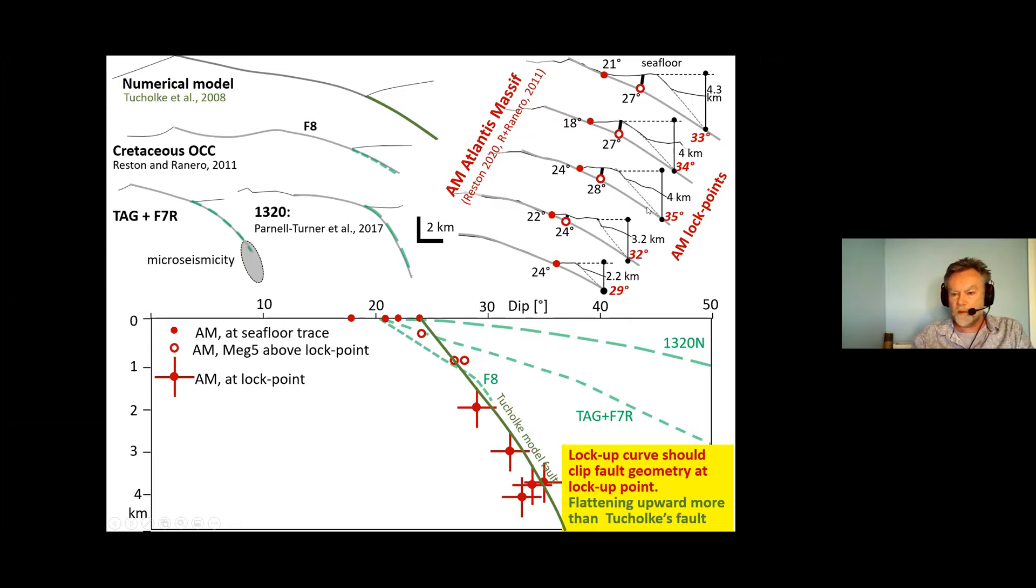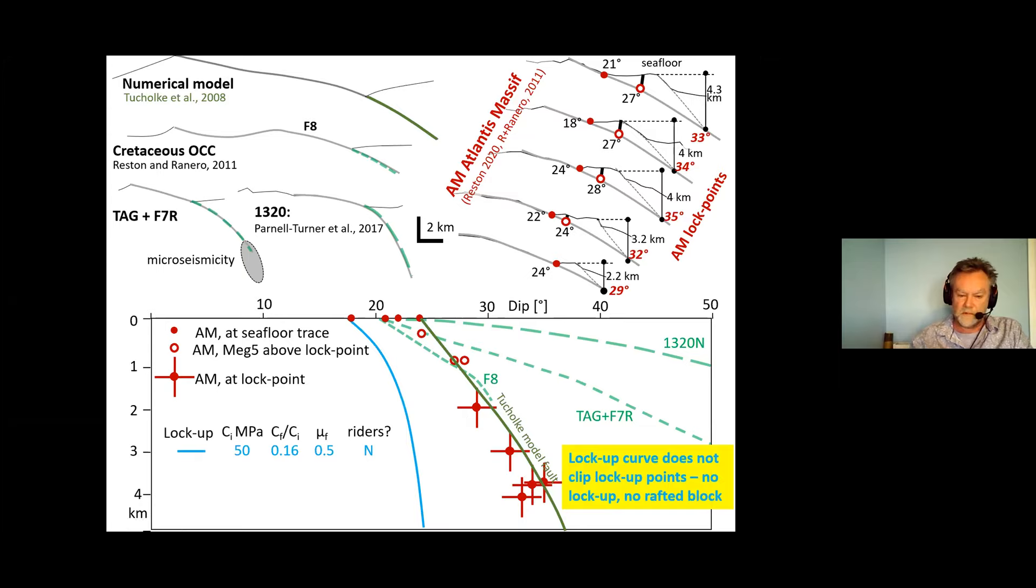We can basically estimate where the dip of this fault might be at depth but where in this case it has locked. So these are the locking points where the rider block formed, these are the shallower portions where the rider block didn't form and this is where we want to try and see where we get with our lockup curves. So ideally what we would expect is to have a lockup curve which should basically run to the left of these points here. It should run to the left of these points here because these didn't lock up, this was slipping until the lockup occurred deeper down and then it should clip these points here and go through these points because that's where lockup occurred.